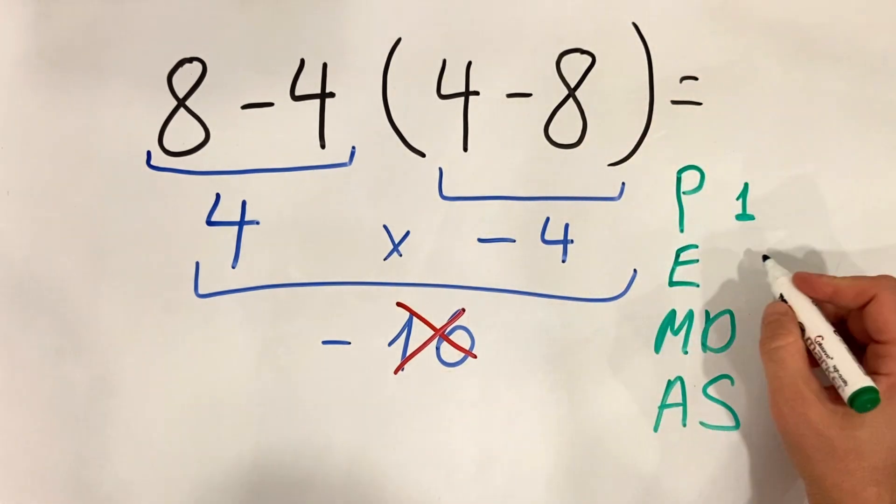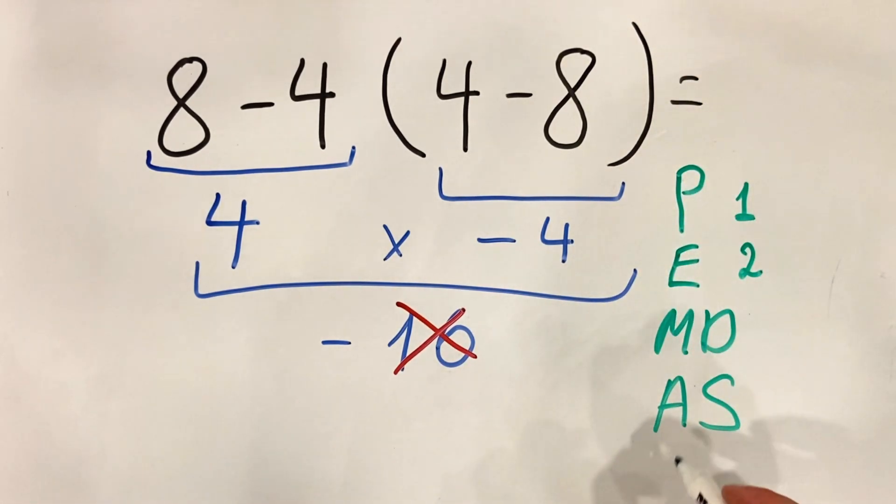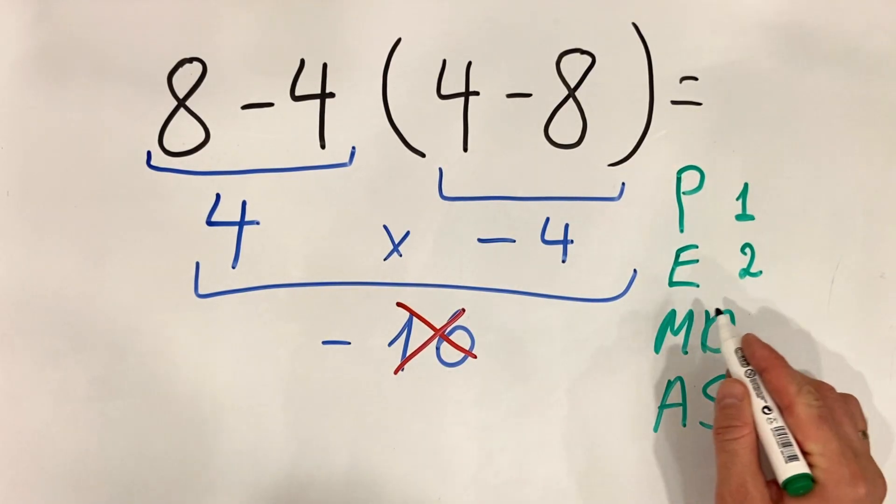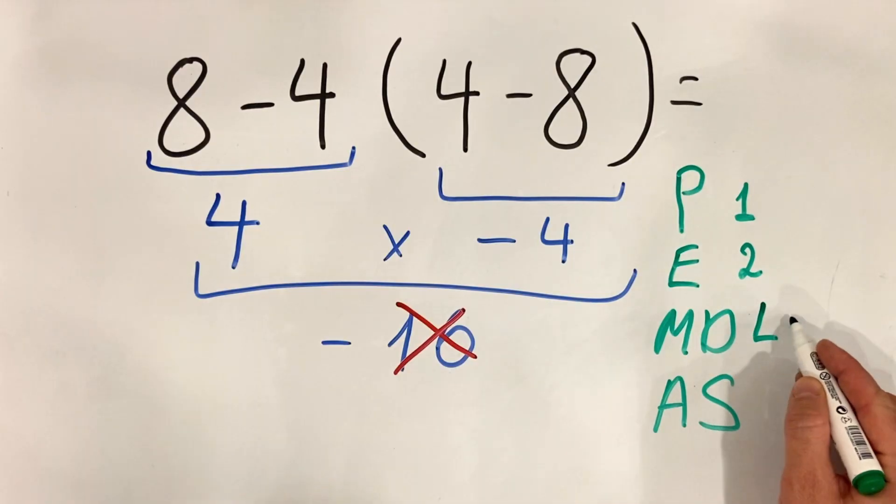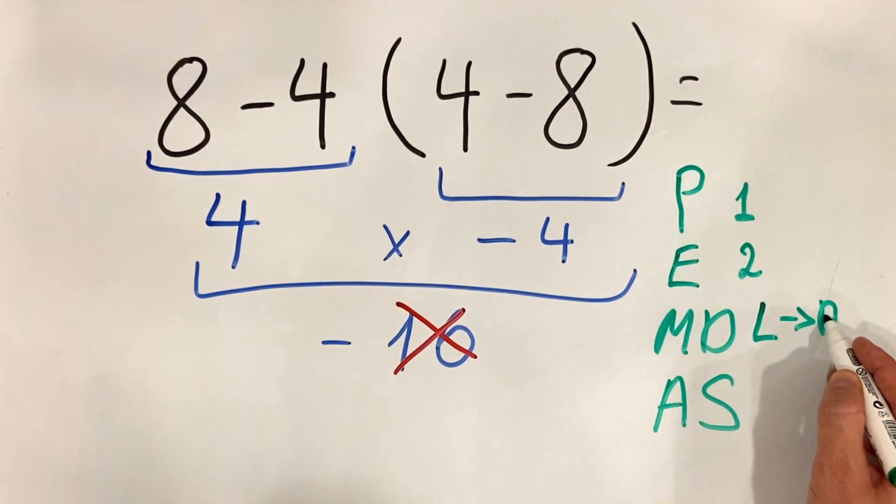If we had exponents, we do it in the second place, but in this case we don't have it. Then we have multiplication and division, and it's important that they have equal priority and they need to be done from left to right, and it's in the third place.